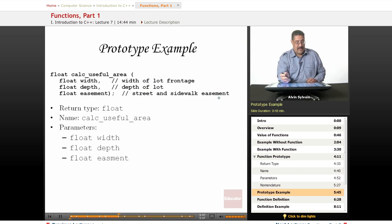So, here's an example of a prototype. We're returning a float. We're going to calculate the useful area. We need the width passed in. We need the depth passed in. And these are each floats.